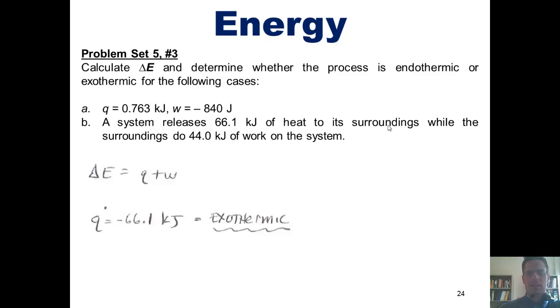Now, it tells us further that the surroundings do 44 kilojoules of work on the system. So does that mean W is positive or negative? Well, we imagine the surroundings depositing 44 kilojoules of work into the system's energy bank account. That is a deposit. Thus, it is positive. We have our values for Q and W. We now throw them into the equation and determine that the final answer is negative 22.1 kilojoules.